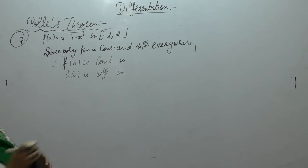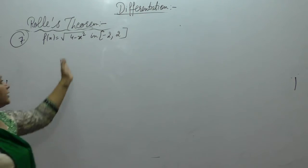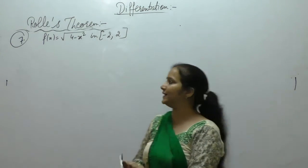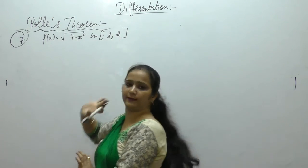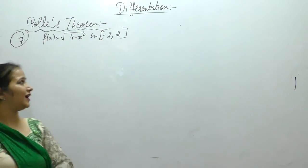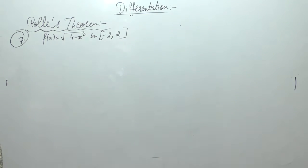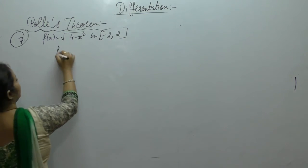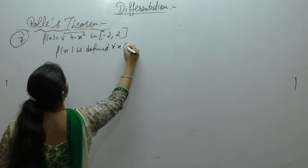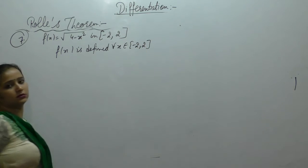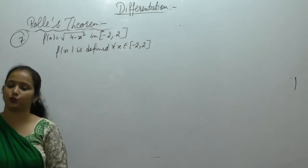Examining this function: f(x) is defined for all x in [-2, 2] and has a unique value at each point. The limit of f(x) equals the value of the function at each point of [-2, 2]. Therefore, the function is continuous on [-2, 2].